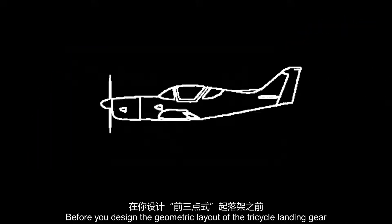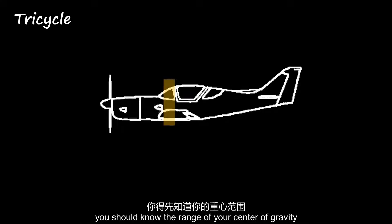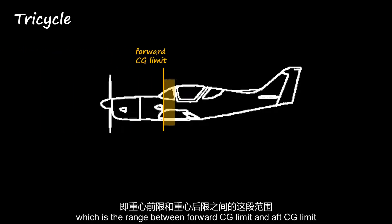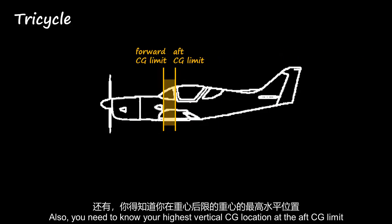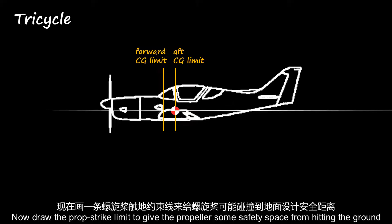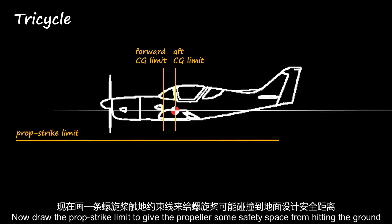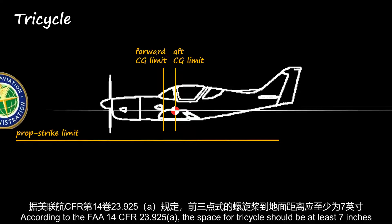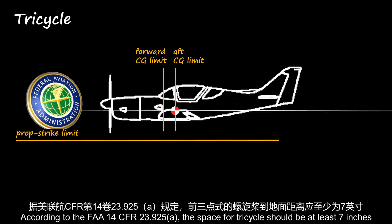Before you design the geometric layout of the tricycle landing gear, you should know the range of your center of gravity — that is, the range between the forward CG limit and the aft CG limit. You also need to know your highest vertical CG location at the aft CG limit. Now draw the prop strike limit to give the propeller some safety space from hitting the ground. According to FAA 14 CFR 23.925A, the clearance for a tricycle should be at least 7 inches.